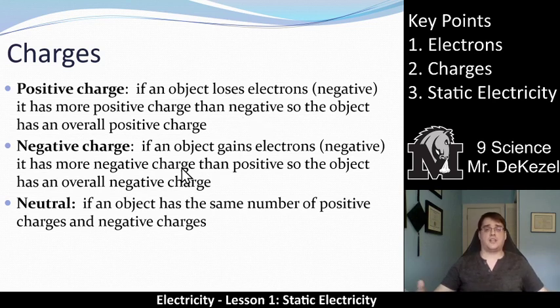You have a negative charge if the object gains electrons. You have more negative charge than positive, so you get a negative overall charge. Well, you can also have neutral charge. And this is if the object has the same number of positive charges and negative charges.